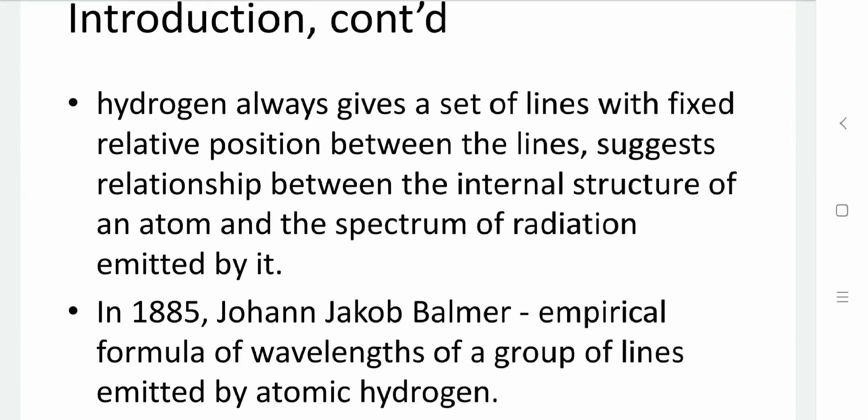We are taking hydrogen as an example, which has one electron. This simplest model gives a set of lines with relative positions between the lines, suggesting the internal structure of the atom very easily with less complexity. In 1885, Jacob Balmer gave the empirical formula of wavelength of group of lines emitted by the hydrogen atom.